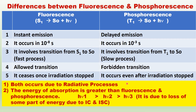Both fluorescence and phosphorescence are radiative processes only. In this comparison, both occur due to radiative processes. The energy of absorption is greater than the fluorescence emission energy. The Stokes shift is due to internal conversion or inter-system crossing.